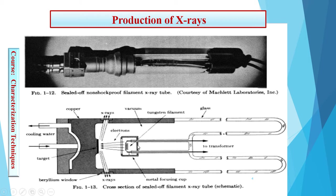There is also a cup maintained at a very high negative potential. This cup is used to collimate or focus the electrons onto the target at a very sharp focal point. The very high negative potential of this cup repels the electrons — since electrons are also at negative potential — from the upper and lower sides, confining them to a very small focal point from which X-rays are emitted.